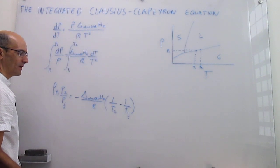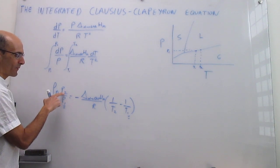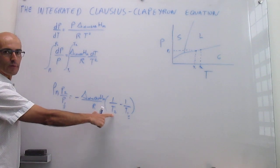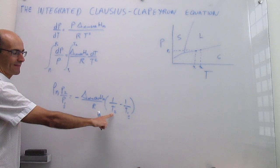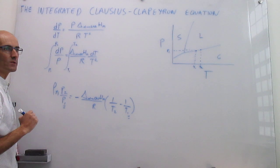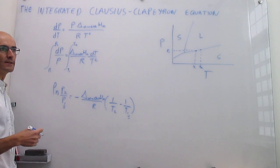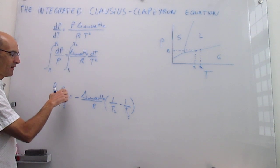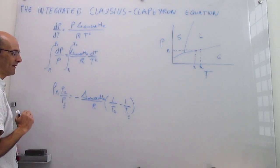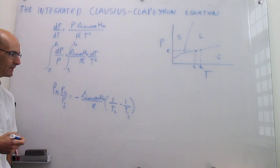Knowing point T1, P1 on the phase boundary, you can predict the vapor pressure at a new temperature — say 300 K or 350 K — or you can determine at what temperature you would have a particular vapor pressure. These are the types of problems you will see in the homework.